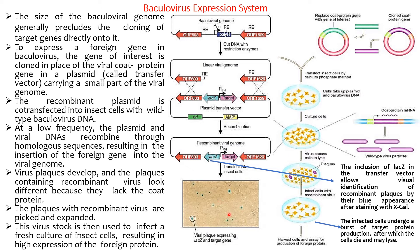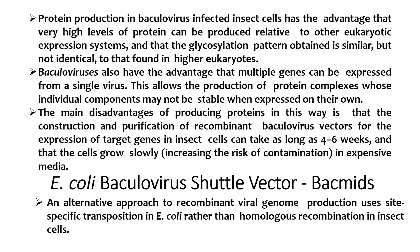Since the recombinant virus contains a lacZ gene, the inclusion of lacZ in the transfer vector allows visual identification of recombinant plaques by their blue appearance after staining with X-gal. The viral plaques develop, and the plaques containing recombinant virus look different because they lack the coat protein. Plaques with recombinant virus are picked and expanded. The virus stock is then used to infect fresh cultures of insect cells, resulting in high expression of foreign protein.